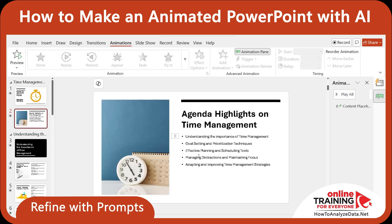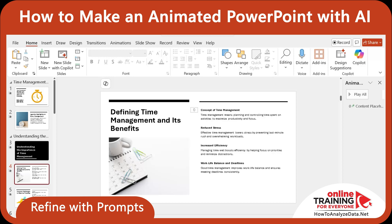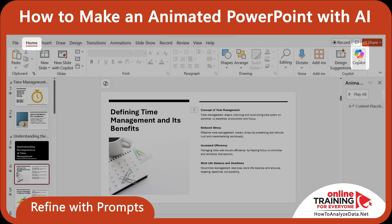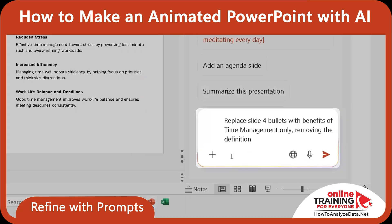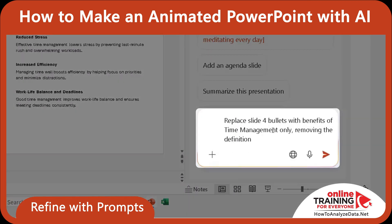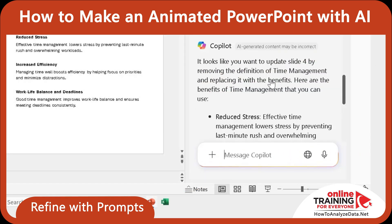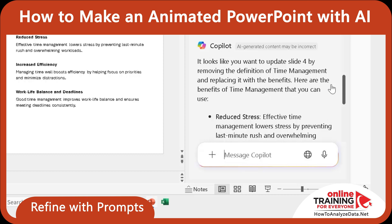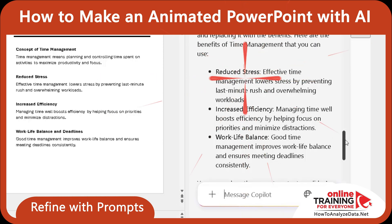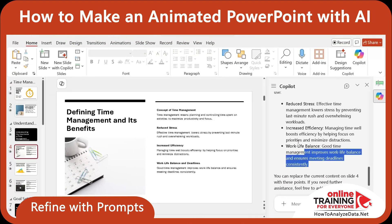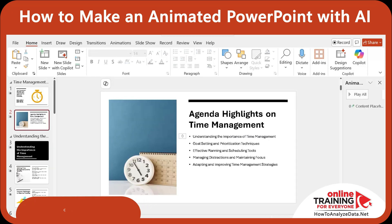I also wanted to tweak slide 4. Right now it shows content for defining time management and its benefits — I only wanted to keep the benefits. So I opened Copilot by navigating to the Home tab and clicking Copilot. Then I typed in the Copilot window: replace slide 4 bullets with benefits of time management only, removing the definition. Copilot processed and understood my request, and generated 3 bullets: Reduce stress, Increase efficiency, and Work-life balance. It also suggested I copy this content and apply it to the slide in PowerPoint.